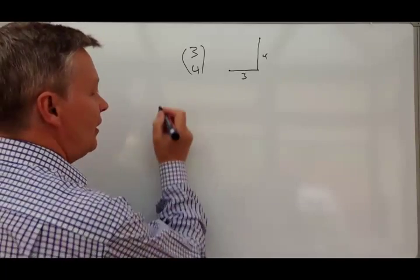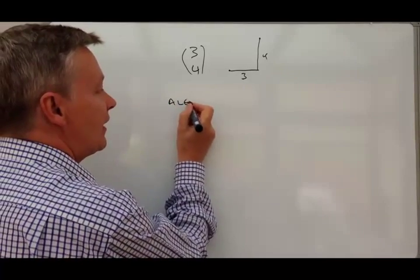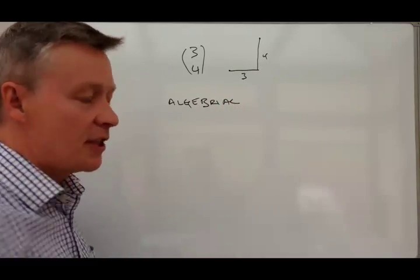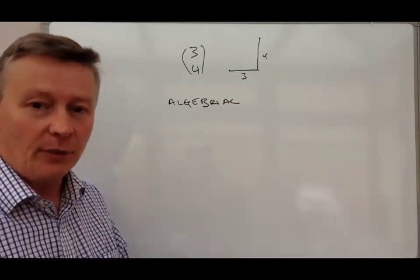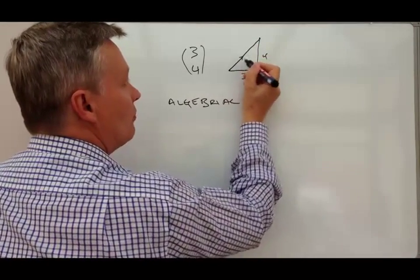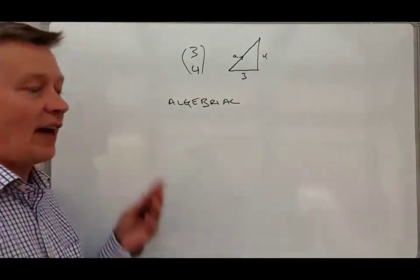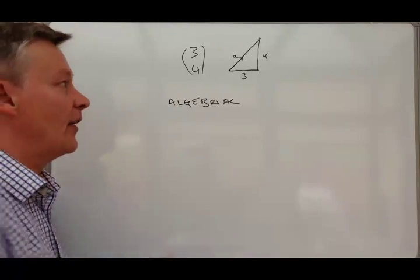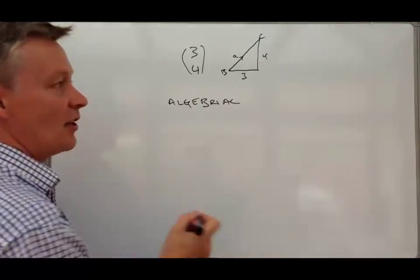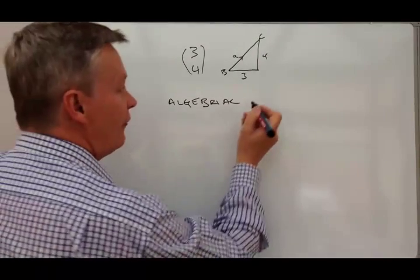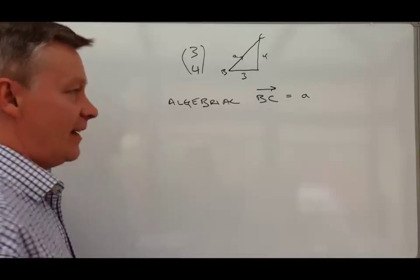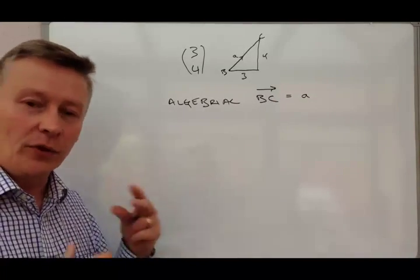What we're going to be doing in this series of videos is looking at a slightly different sort of algebraic vector. The couple of things that you need to be aware of is that we're going to be looking at vectors where it gives you an actual movement. So it might say this is vector A, something like that, and it's going to go from B to C.